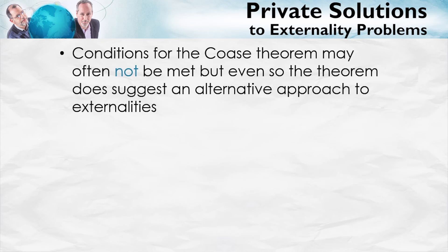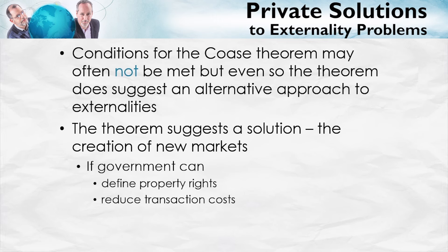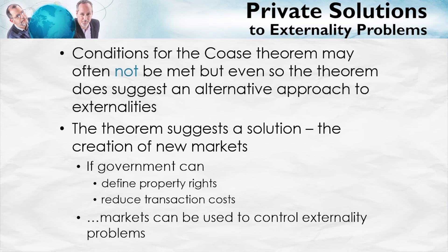Even so, however, the theorem does suggest an alternative approach to externalities. We've already looked at Pigouvian taxes and subsidies and command and control. The Coase theorem suggests another solution, namely the creation of new markets. If the government can define property rights and reduce transactions costs, then markets can be used to control externality problems. So, the Coase theorem plus a little bit of command and control, in terms of defining property rights and reducing transactions costs, can create a new form of solution to externality problems. And, in fact, tradable permits is what we're going to be looking at in the next talk.